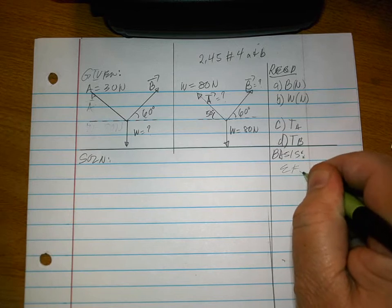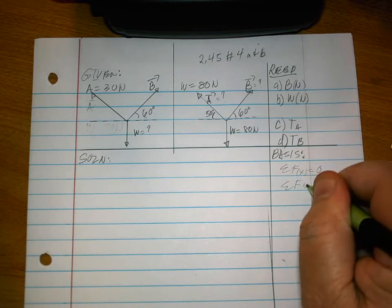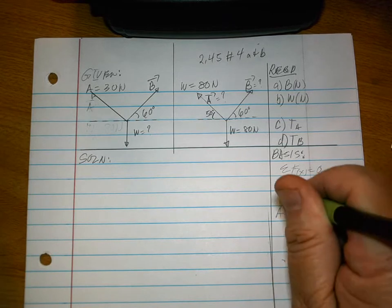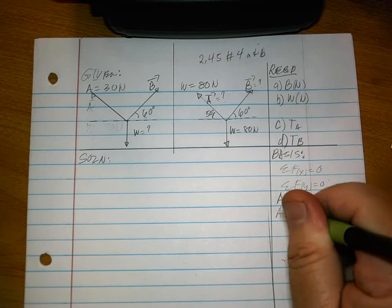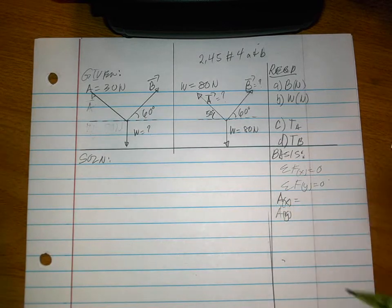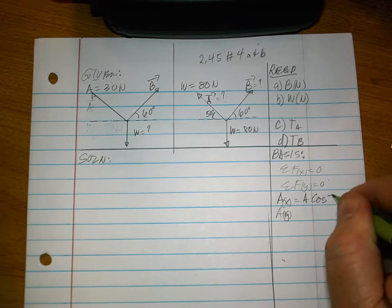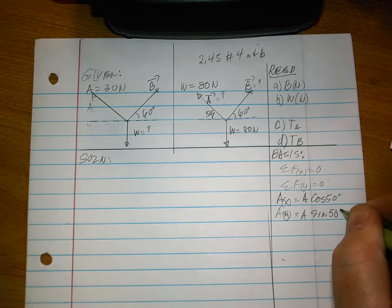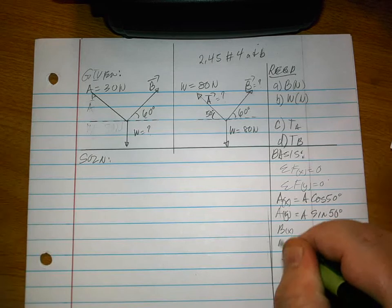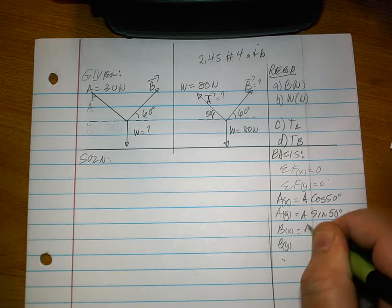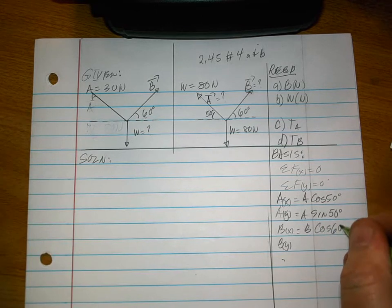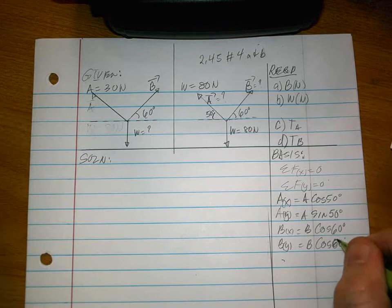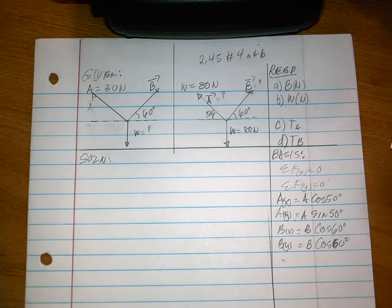The basis is the same: summation of all forces along the X is equal to zero, summation of all forces along the Y is equal to zero. We have AX and AY, where AX is equal to A cosine of 50 and AY is equal to A sine of 50. Then BX and BY: BX is equal to B cosine of 60 and BY is B sine of 60, because 60 is the angle associated with B.